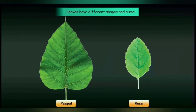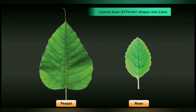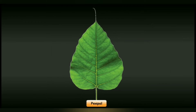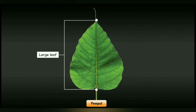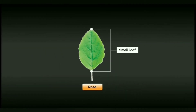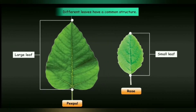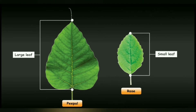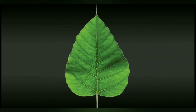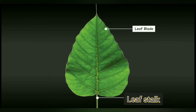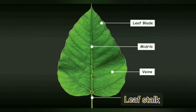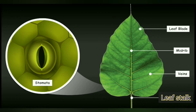Leaves come in different sizes and shapes. Some trees have large leaves, like banyan trees, and others have small leaves, like rose plants. Although they are of different shapes and sizes, they have a common structure. Some of the different parts of the leaf are: leaf blade, leaf stalk, midrib, veins, stomata, and leaf apex.